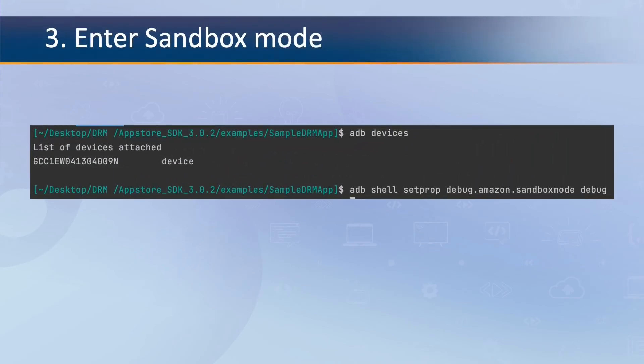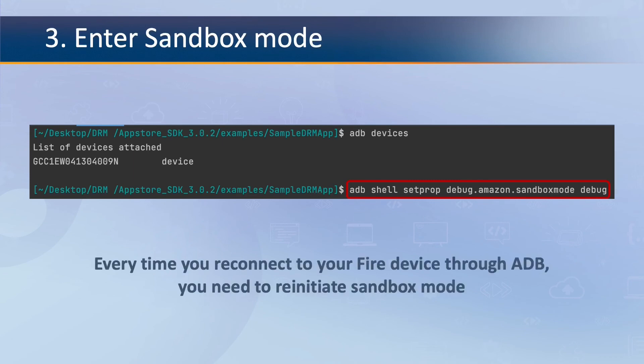The third and final step is to enter sandbox mode. Sandbox mode constrains calls that would normally go to the App Store client to route to the Amazon App Tester instead. Use this mode only for testing locally. In the same terminal where you connected to your Fire device through ADB, enter sandbox mode using the command: adb shell setprop debug.amazon.sandboxmode debug. Every time you reconnect to your Fire device through ADB, you need to re-initiate sandbox mode.